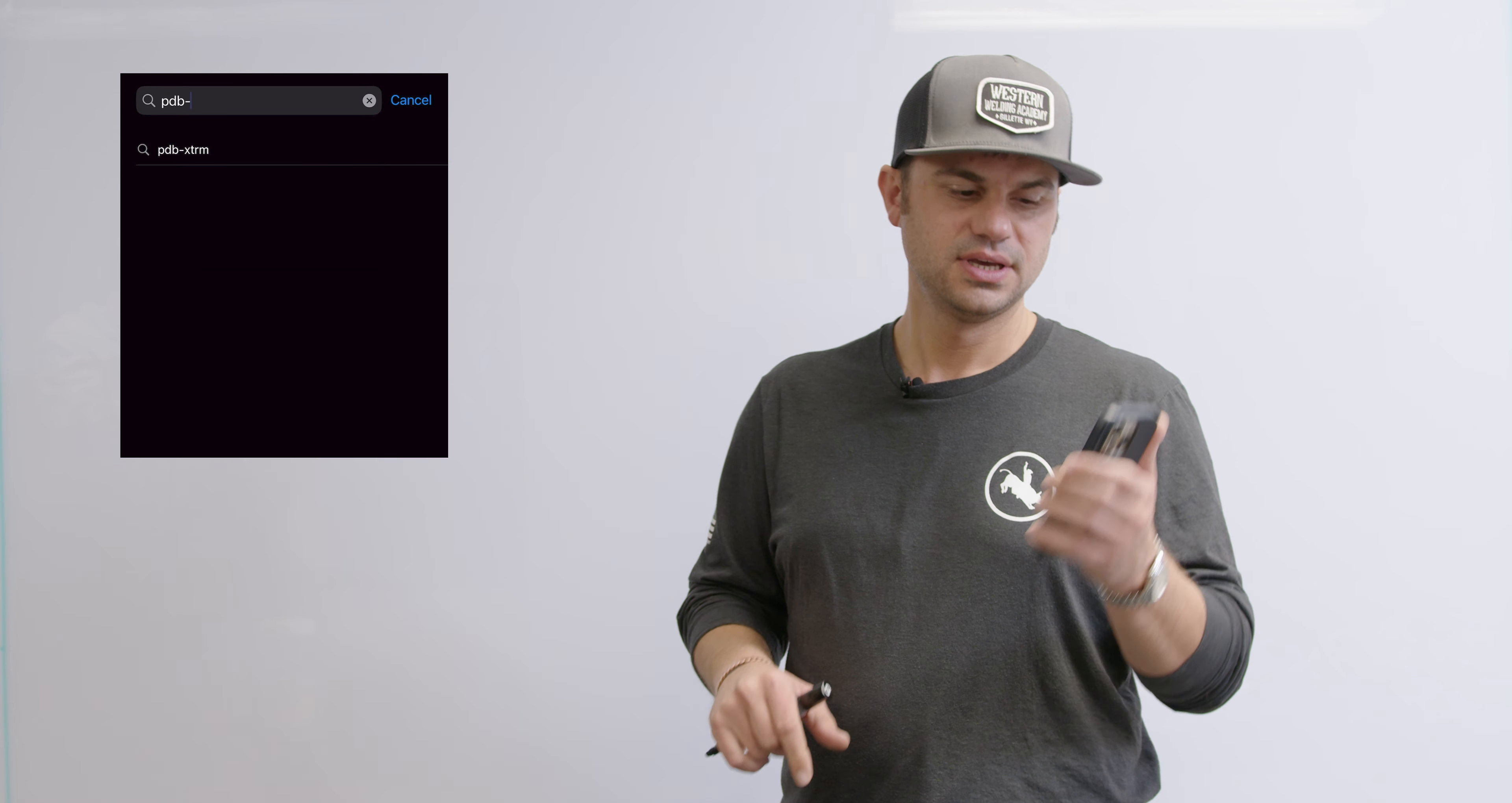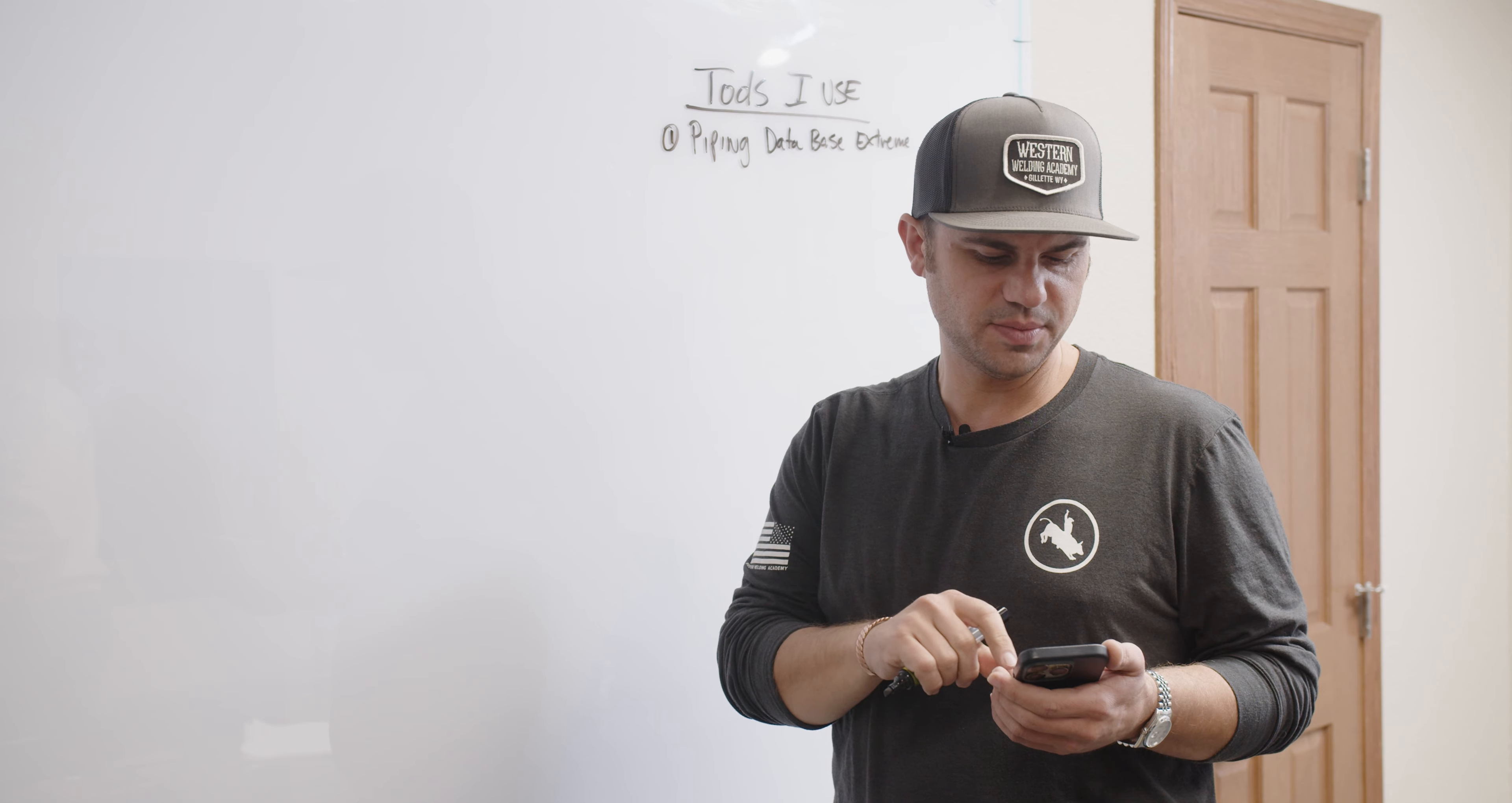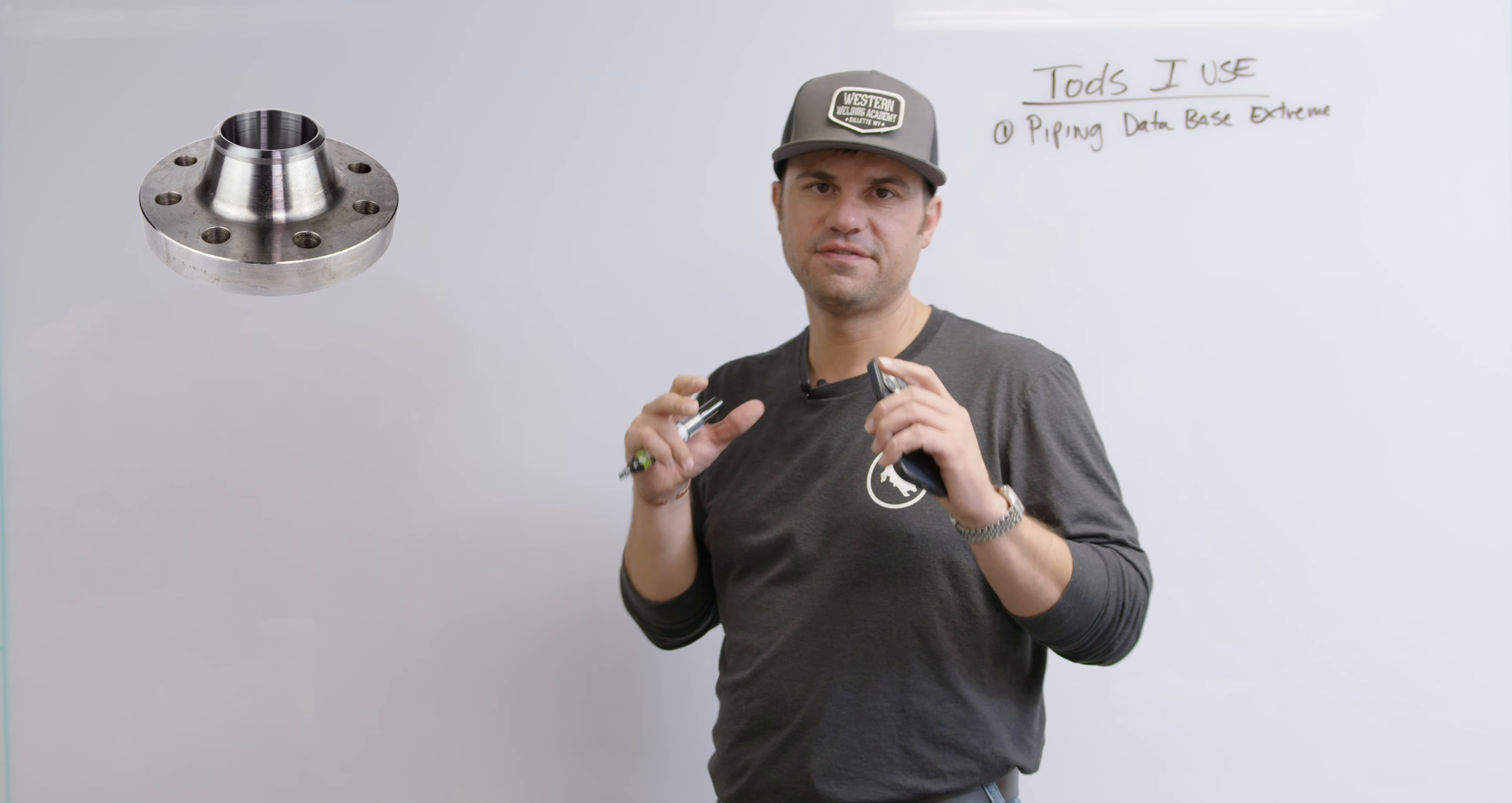Hey what's up guys, Tyler Stassi here at Western Welding Academy. In today's video we're going to do a little pipe fitter stuff. This is how you calculate the end-to-end pup length measurement of six inch pipe.